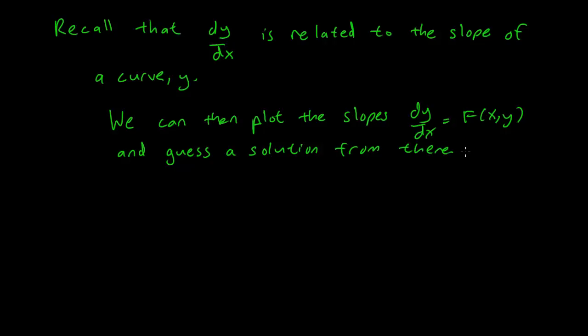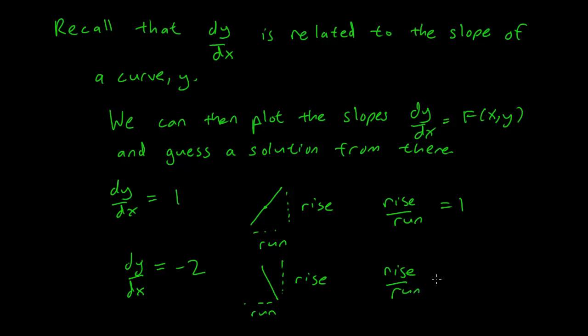Now let me just recap on what it means to have a slope of a certain value. So if dy/dx has slope 1, for instance, this means that at the point in the curve we care about, the rise over the run of the slope is equal to 1. Similarly, if we have dy/dx equals minus 2, then we know that the rise over the run is equal to minus 2.